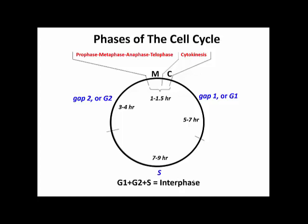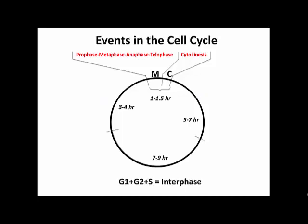Unique events occur during each phase. In Gap1, cells grow very rapidly. Organelles will duplicate — ribosomes will duplicate, mitochondria will duplicate, and if it's a plant cell, chloroplasts will duplicate. In other words, if you're going to grow a cell, you have to have in a larger cell proportionally as many components as you would in a smaller cell.